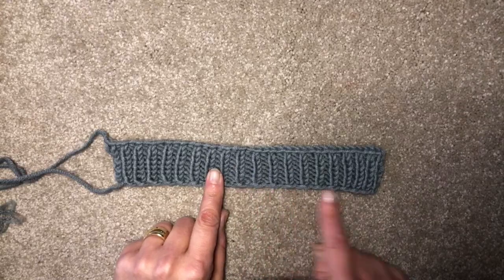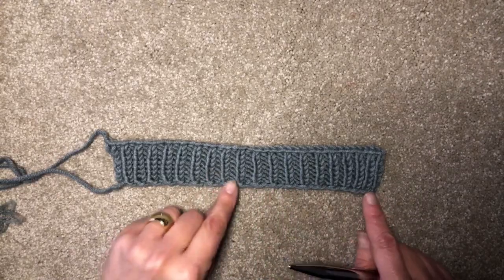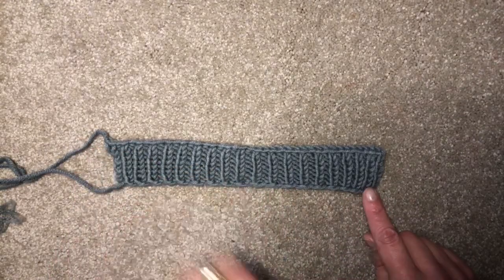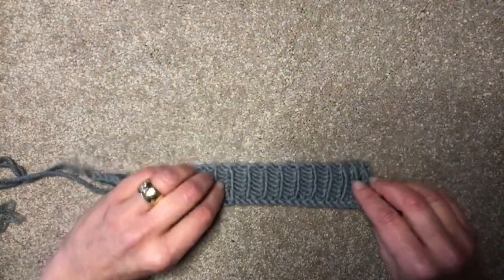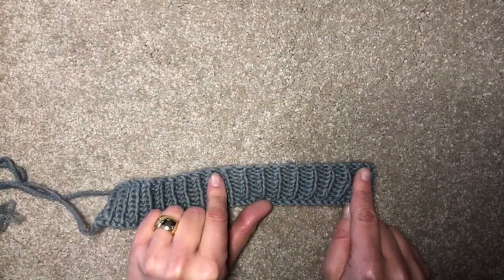So here I worked that long tail cast on and then I launched into my ribbing. You see the edge here, and if I flip it over it's different on this side.